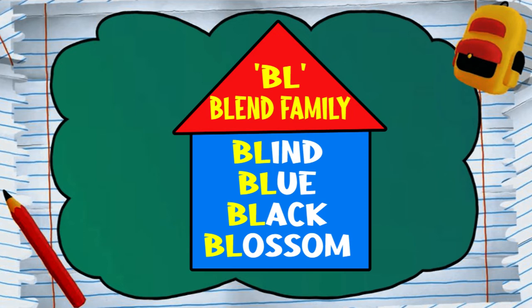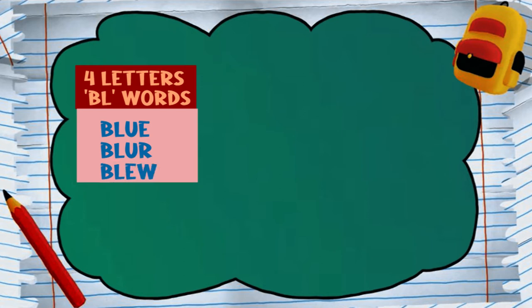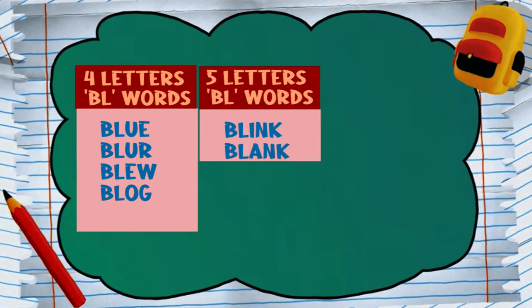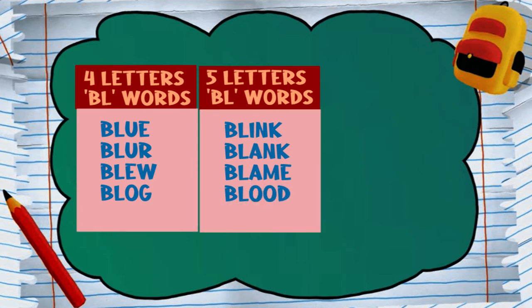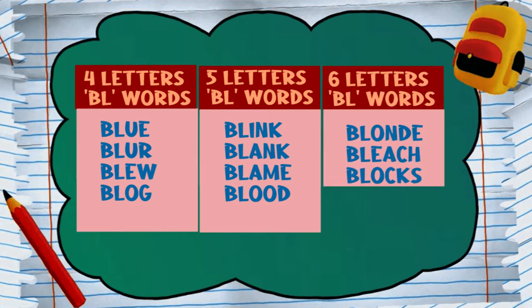You will notice that the words do not have the same amount of letters — some have four, some have five, and some have even six letters. Let's see if you could find more words that belong to the BL word family. For words with four letters beginning with the BL blend, we have blue, blur, and blog. Those with five letters: blink, blank, blame, blood. And those with six: blonde, bleach, blocks, and blouse. As you say these words, listen to ensure they do begin with the BL blend. You will now add three more words to this blend family.